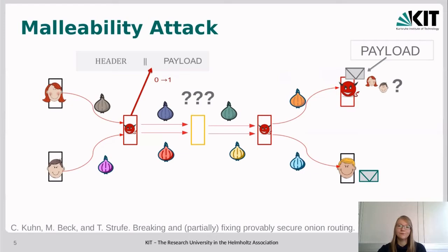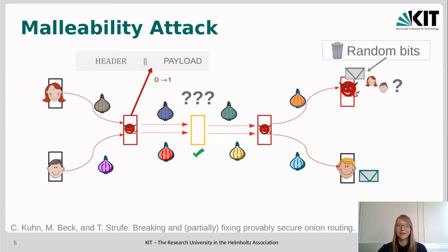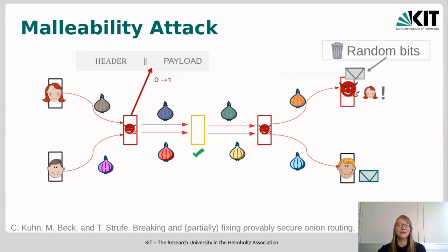The next honest relay will not notice that anything in the onion has been modified because it only checks the header, and that check passes. The onion is processed further until it arrives at the receiver, where the adversary notices that the message doesn't look as expected — instead of English language or a typical pattern, it contains only random bits. This tells the adversarial receiver that the onion must have been modified, and it is highly likely that this was Alice's modified message. Therefore, the adversary learns who is communicating with whom, even though there is an honest relay in between.